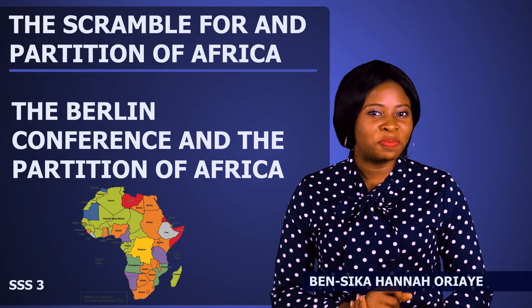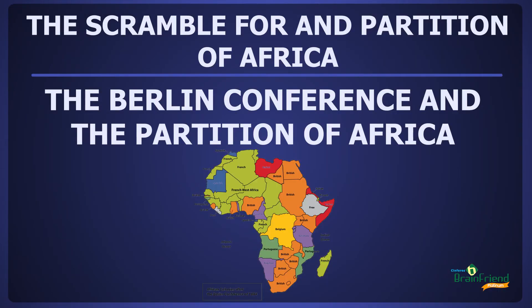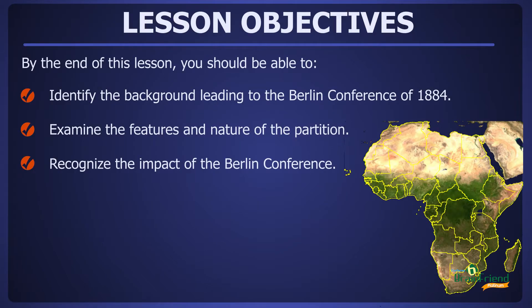Hi, my name is Bensi Kahana. Welcome to today's history class. Our theme for today is the Scramble for and Partition of Africa, and our topic is the Berlin Conference and the Partition of Africa. By the end of this lesson, you should be able to identify the background leading to the Berlin Conference of 1884, examine the features and nature of the partition, and recognize the impact of the Berlin Conference.